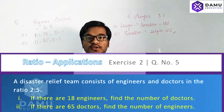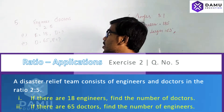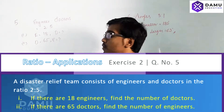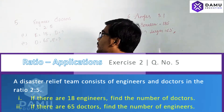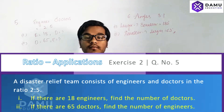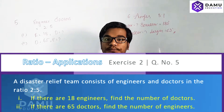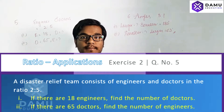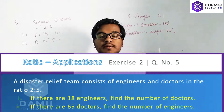Thanks for watching our videos. Please subscribe and support us. Our next question involves engineers and doctors — the ratio of engineers to doctors is given. We can use two methods to calculate: the proportionate method and the normal method, where ratios are taken as actual values.